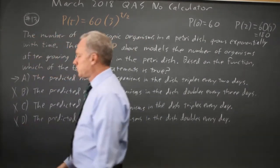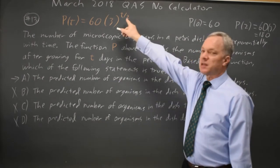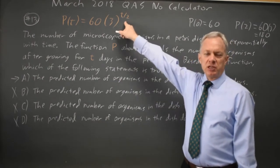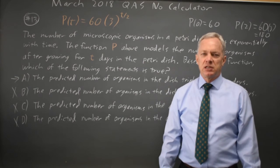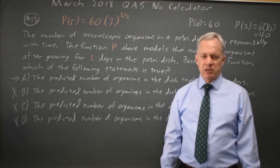The correct answer would be choice A. In this problem, when T goes up by 2, P of T, the number of organisms, is multiplied by 3 to the 2 halves, which is 3 to the 1, we triple.